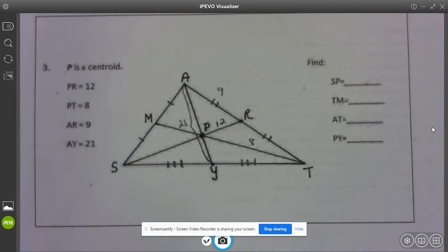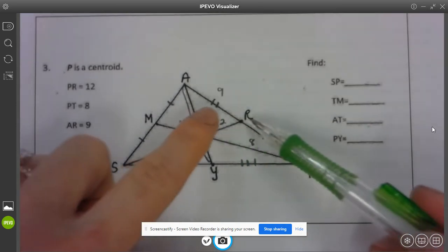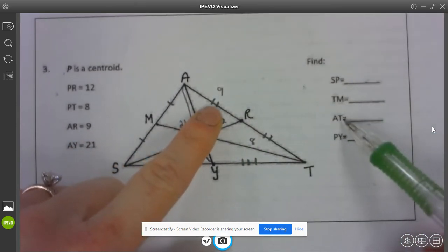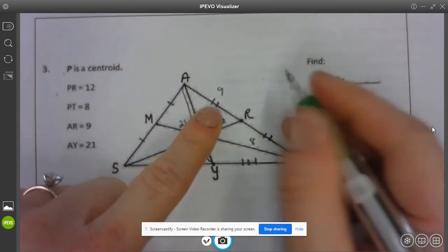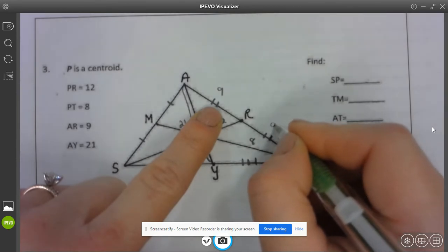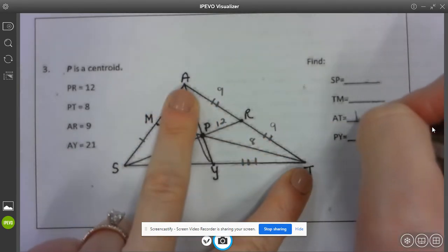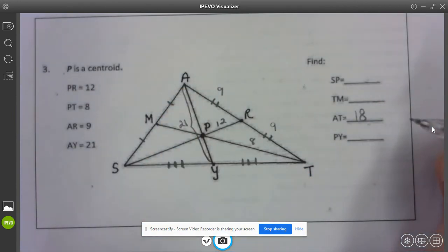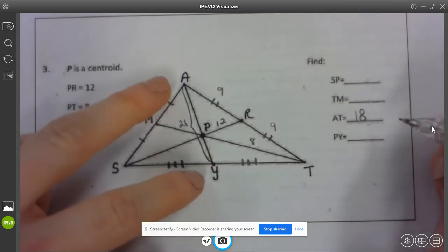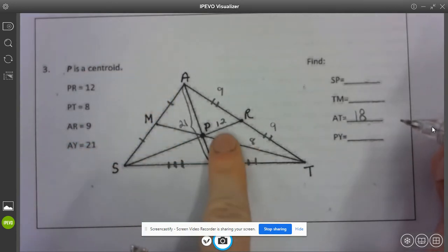Alright, so let's start on the outside so AR I need to find AT well if these are congruent that means this is 9 so both of these together makes AT 18. Now let's go to the inside.